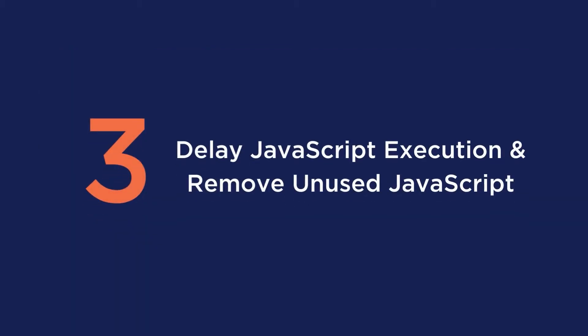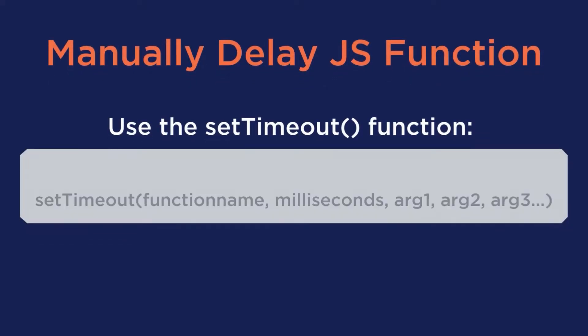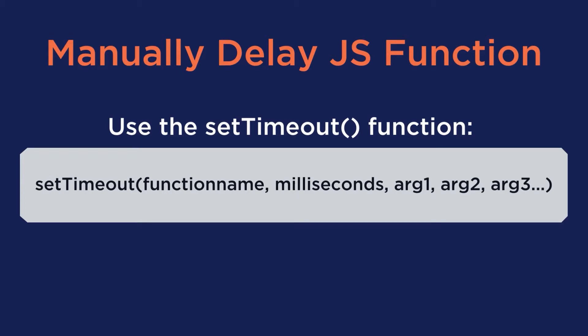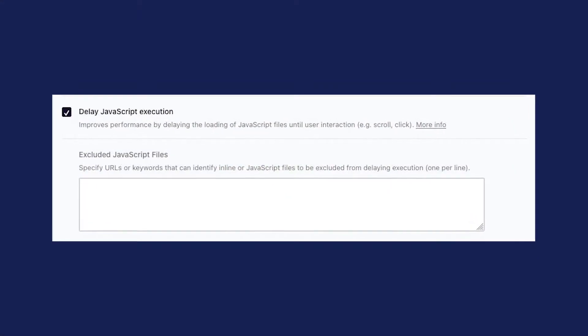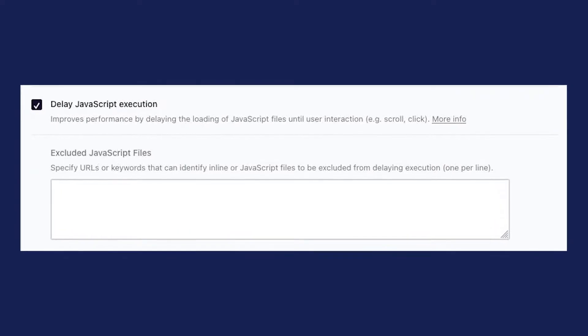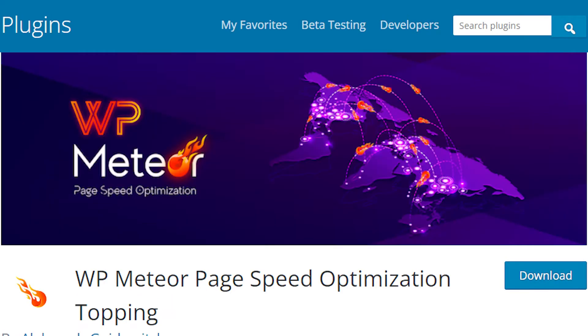Third is to delay JavaScript execution and remove unused JavaScript. You can avoid enormous network payloads by prioritizing the JavaScript that needs to be loaded first. To manually delay a JavaScript function call, you can use the setTimeout function shown on screen right now. For the easiest solution, WP Rocket allows you to fix this in just a few clicks. Alternatively, you could also use plugins like FlyingScript or WP Meteor.